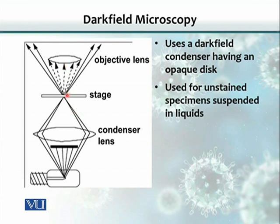The advantage of dark field microscopy is that the field, other than the organism, appears dark. When the light strikes the organism, the organism is lit — it looks white against a totally black background. That is the reason we call it dark field microscopy.